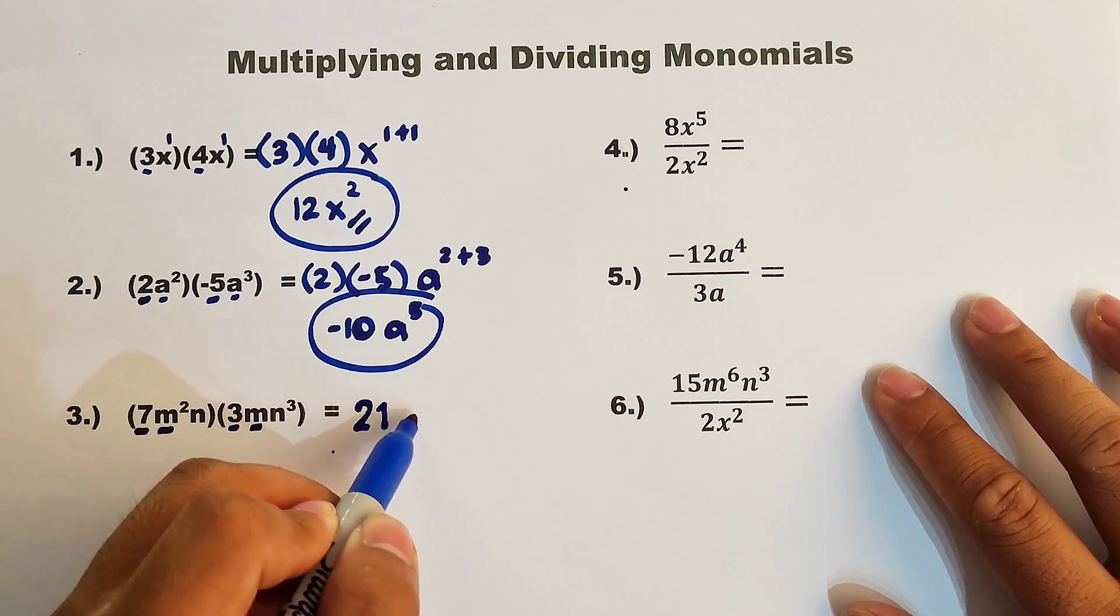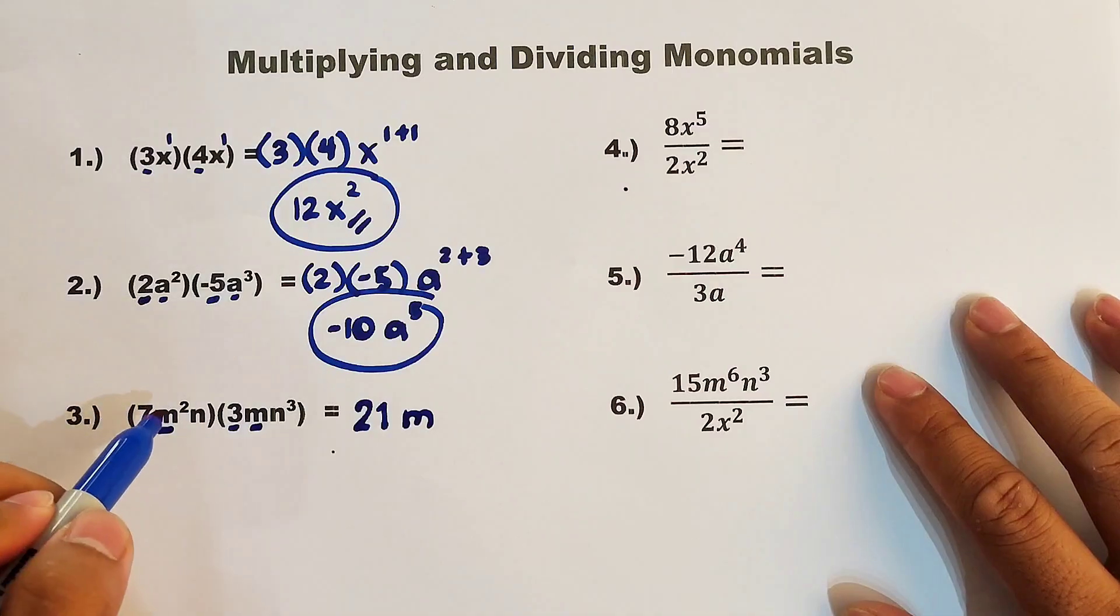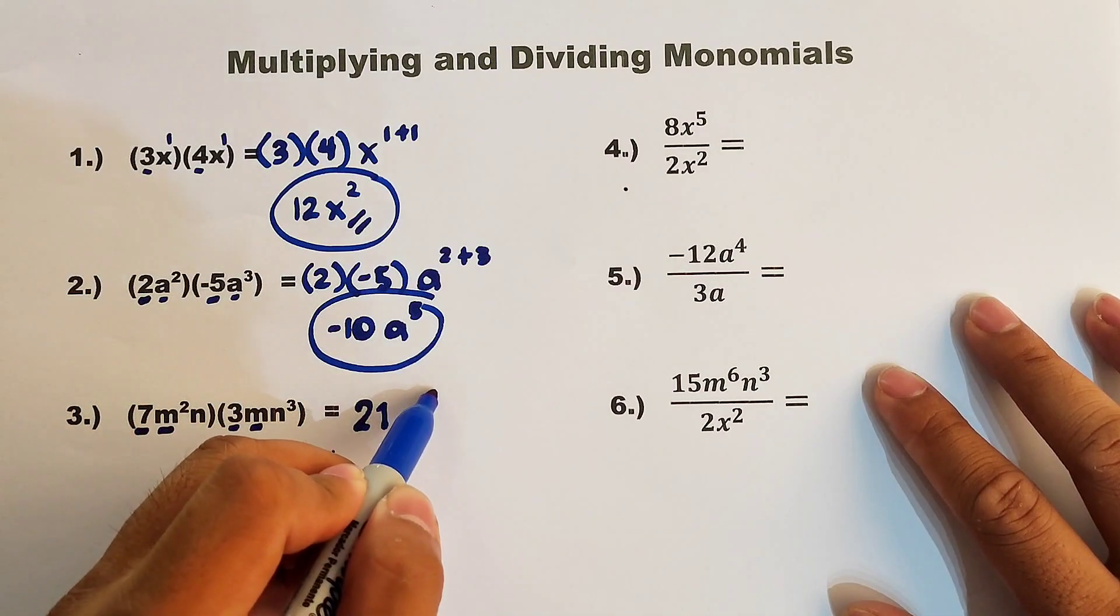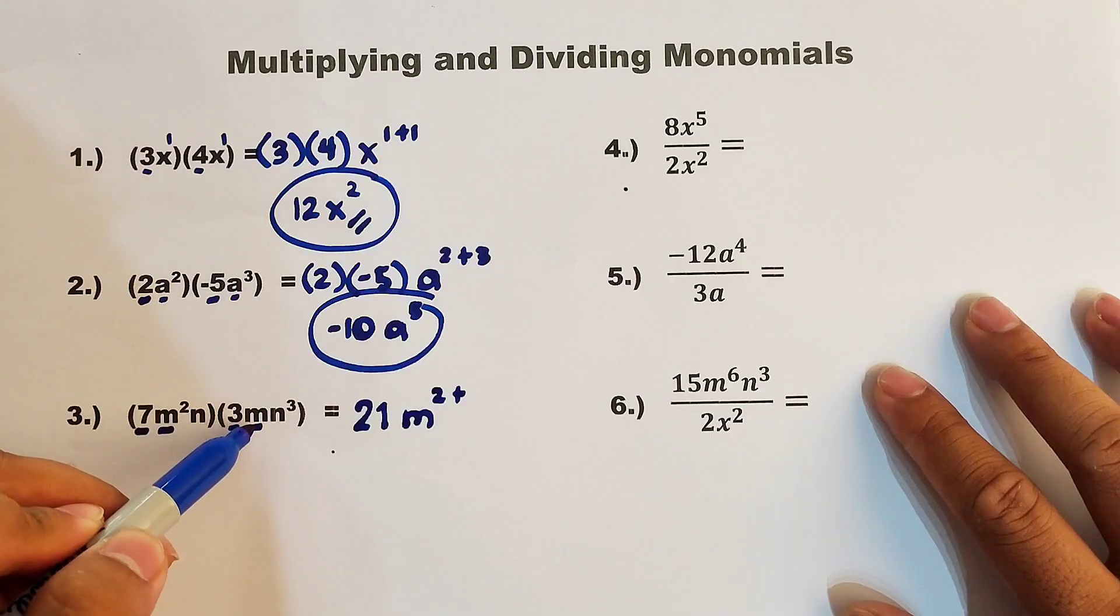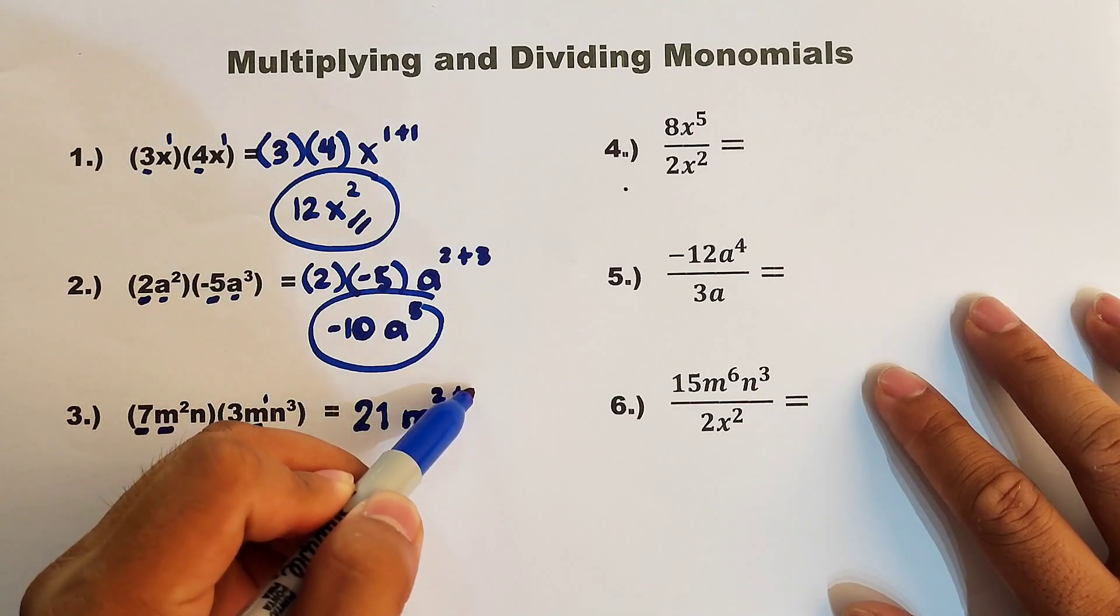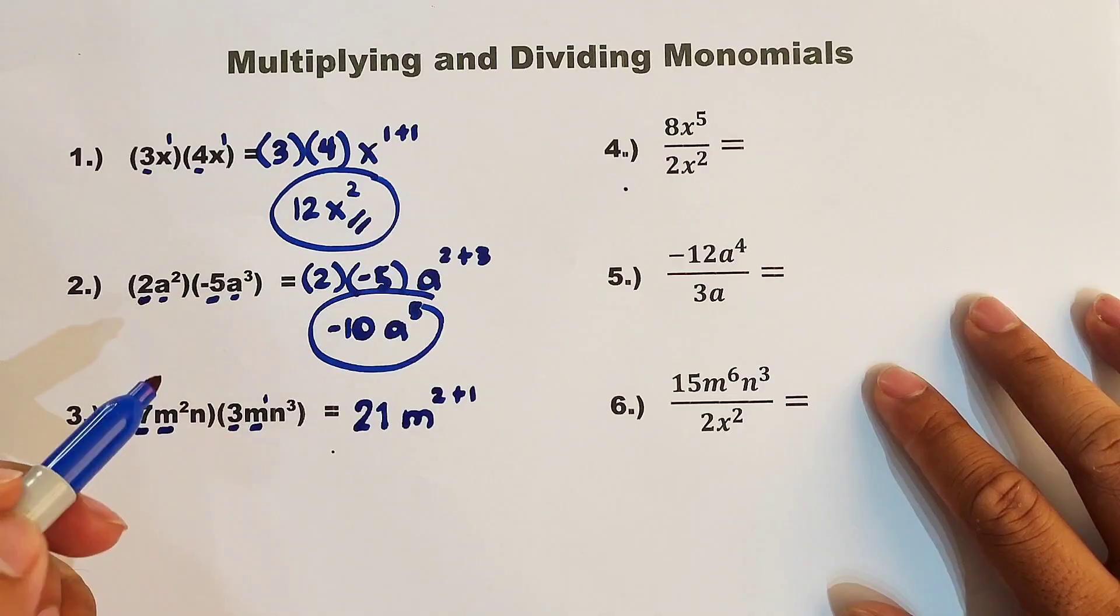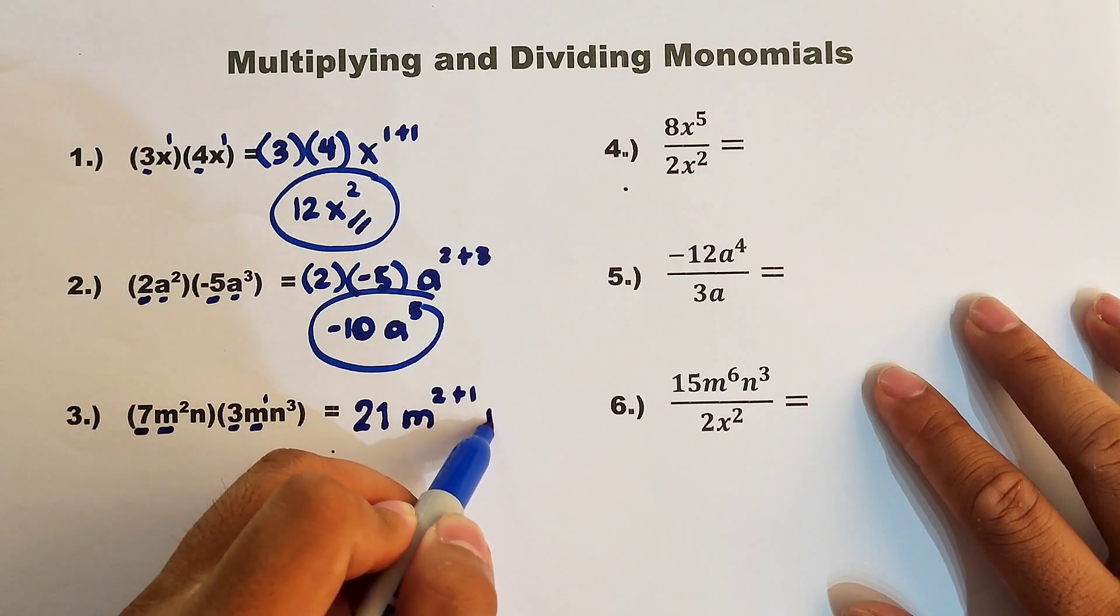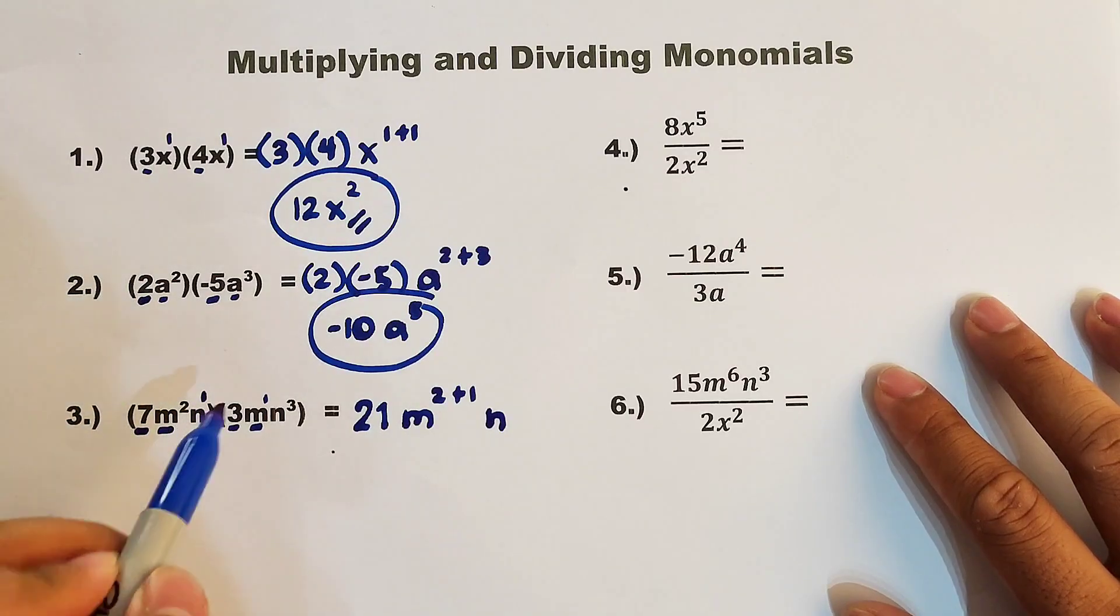Copy first the letter m, then focus on the exponents of the letter m. In the first variable, we have 2 plus the exponent of this variable m is 1, so that is 2 plus 1. And we still have the second exponent, or the variable, which is the variable n. For the variable n, the first n has 1 as an exponent.